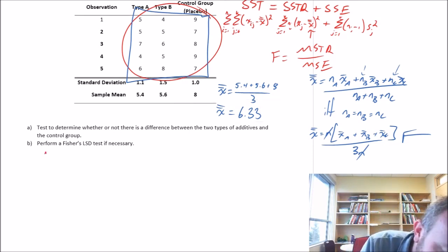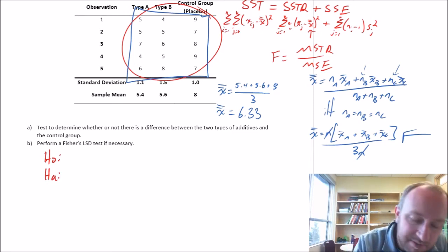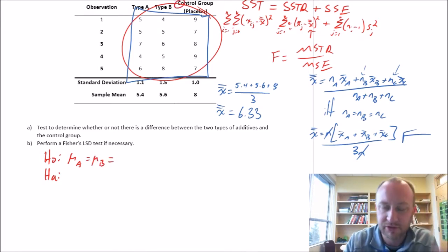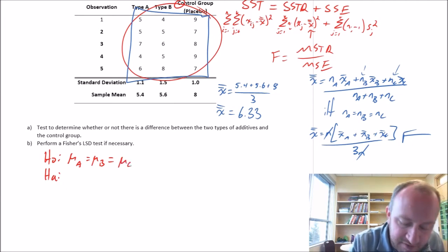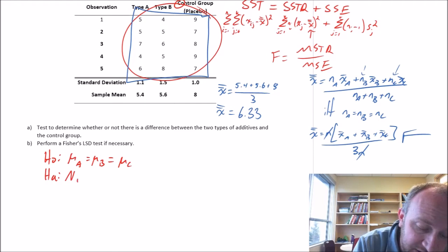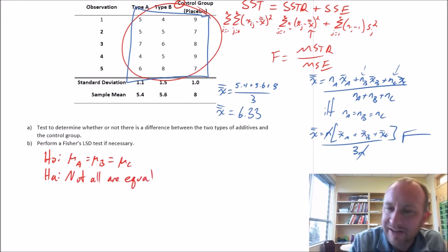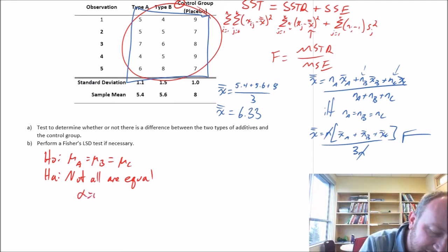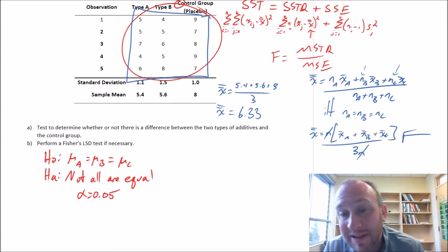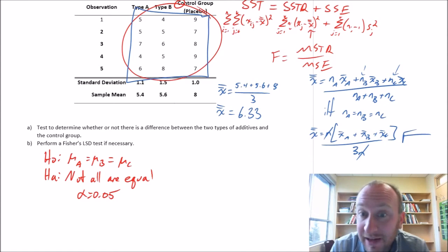Now let's go ahead and set up this test. So our null, our alternative - we have three treatments. So we're testing in our null hypotheses mu_A equals mu_B equals mu_C, that can be called C for the control, that works. And our alternative is not all are equal, or at least one is different. Either one of those two alternatives is fine.